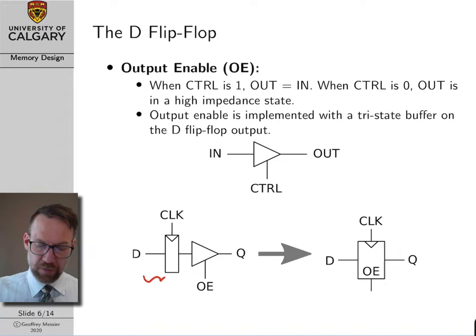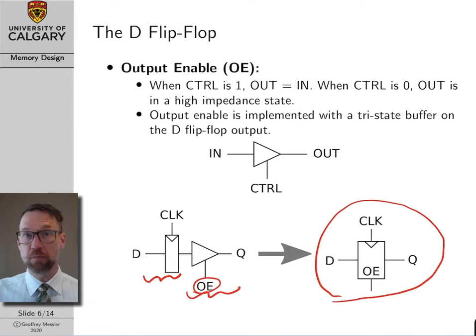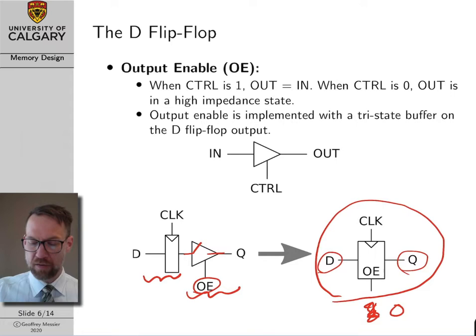To implement this, we basically add a tri-state buffer to our original edge-triggered flip-flop design. We call the control line on the tri-state buffer OE, short for output enable. Our new and improved flip-flop behaves exactly like a regular flip-flop — clocking in the D value on the rising clock edge — however, if output enable is one, the Q output behaves as normal. If OE is zero, the little switch in the tri-state buffer opens and the Q line is in a high impedance state.